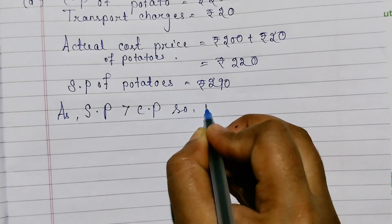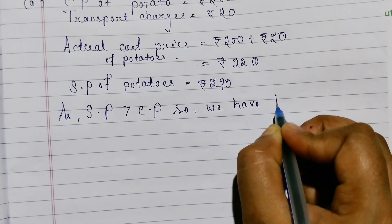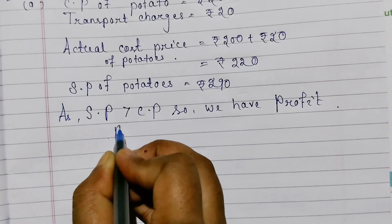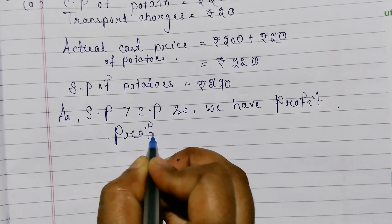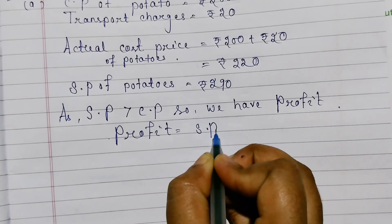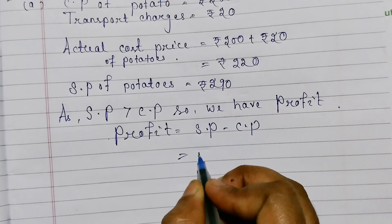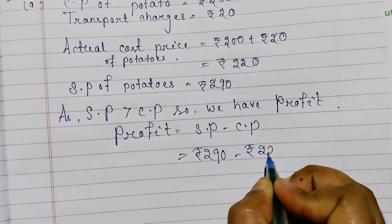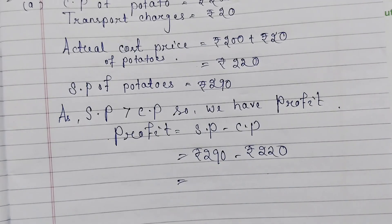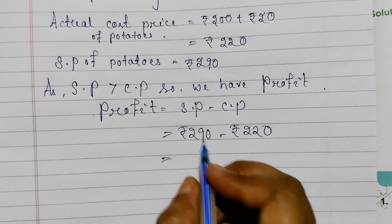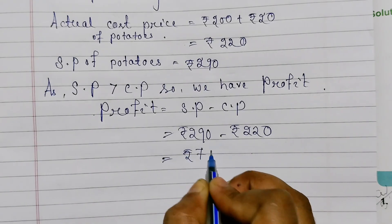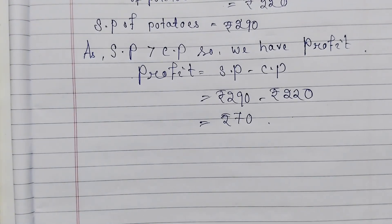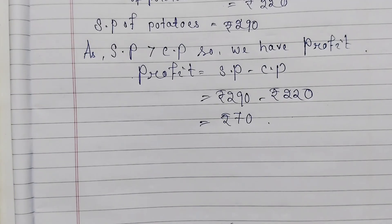So we have profit. Profit equals SP minus CP. Here SP is 290 rupees and CP is 220 rupees. Profit equals 70 rupees. Thus the vegetable seller makes a profit of 70 rupees.